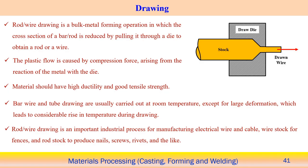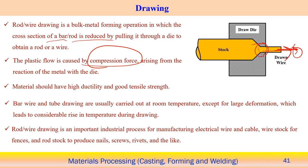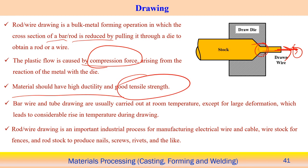The drawing operation differs from extrusion in that a tensile load is applied to pull the material through the die opening rather than a compressive load. At the die, a compression reaction force acts to reduce the cross-section size. The metal must have good ductility to withstand the tensile loading, and must also have sufficient tensile strength for this process.